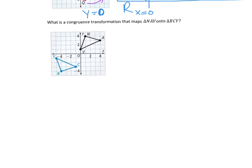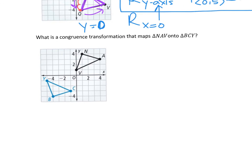Okay. Last one. What is a congruence transformation that maps NAV? So, starting at the black one, moving to the blue one, BCY. NAV is going clockwise. BCY is going, which direction? Counterclockwise. So, there is a reflection happening. What would you do? It is a glide reflection.